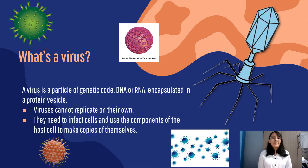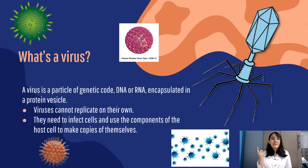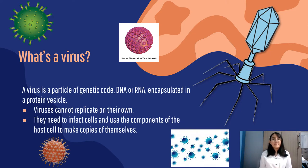First, what is a virus? A virus is a particle of genetic code, DNA or RNA, encapsulated in a protein vesicle. Viruses have two characteristics: the first one is that they cannot grow on their own, and the second one is that they need to infect cells and use the components of the host cells to make copies of themselves.